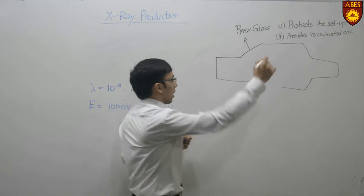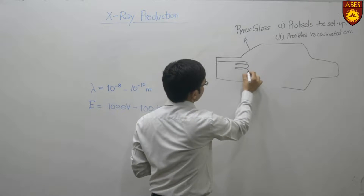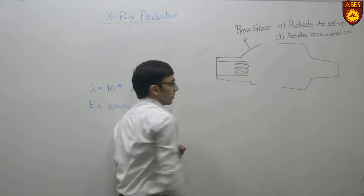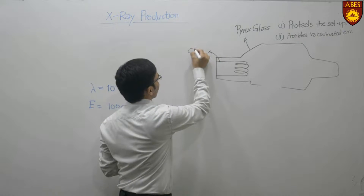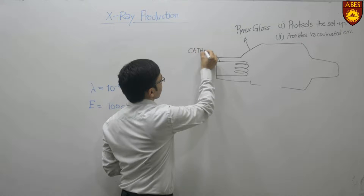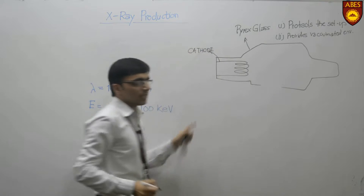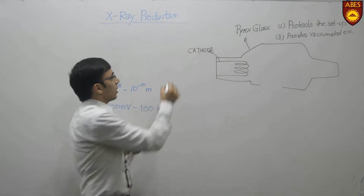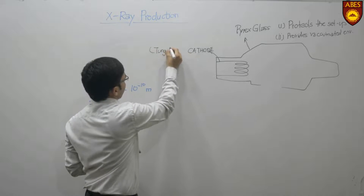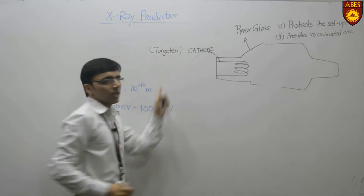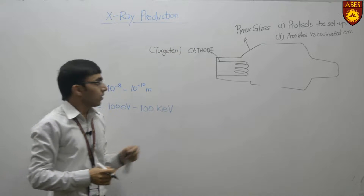Our second component is the cathode filament. This cathode is made up of tungsten, and since it is made up of tungsten, it has a very high melting point.